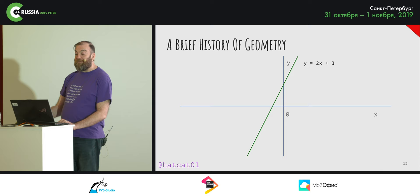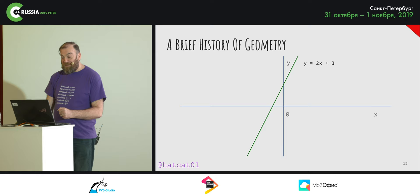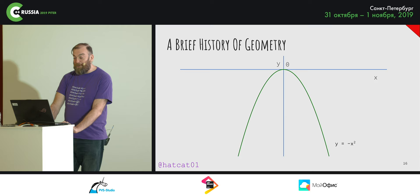You'll recall from elementary education that these two constants have names — the gradient and the y-intercept. This gradient is what allowed Newton and Leibniz to come up with differential calculus, because straight lines are not the only object of interest. Modeling curves is a big topic.